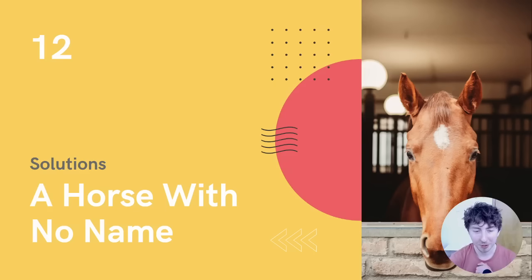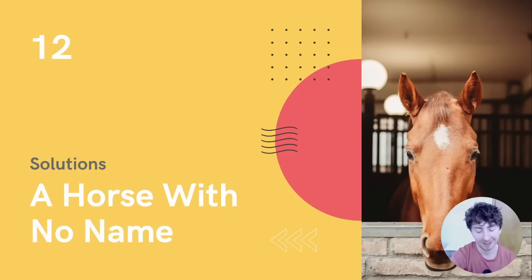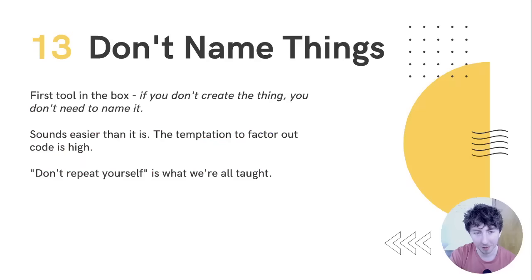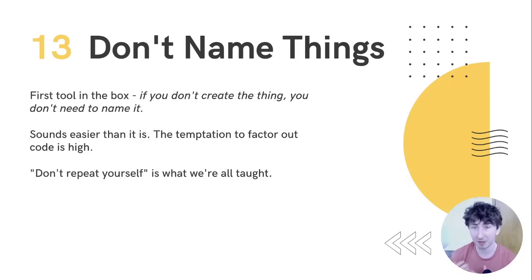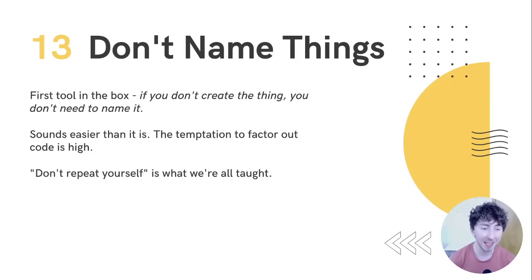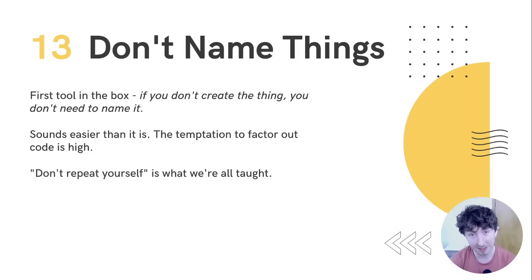What do we actually do about this problem? The first tool you should always reach for is just don't name the thing. If you don't create the thing, you don't need to name the thing. This sounds a lot easier than it is — the temptation to factor out your code is always high.